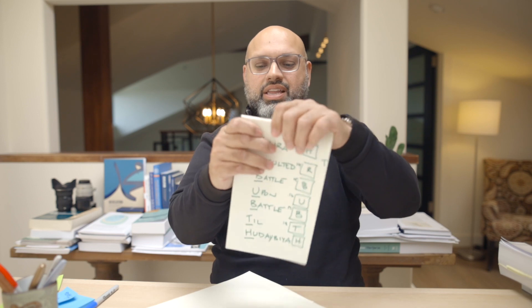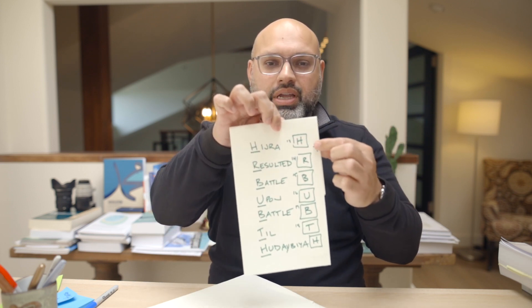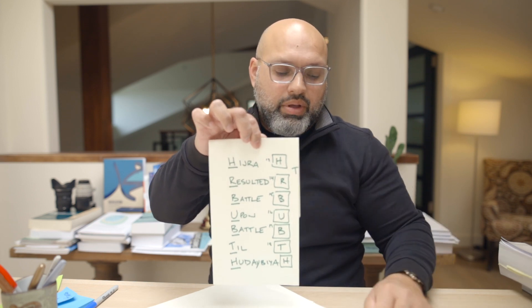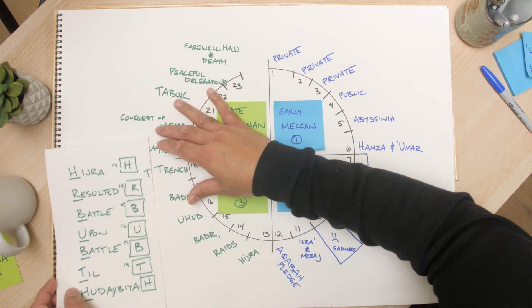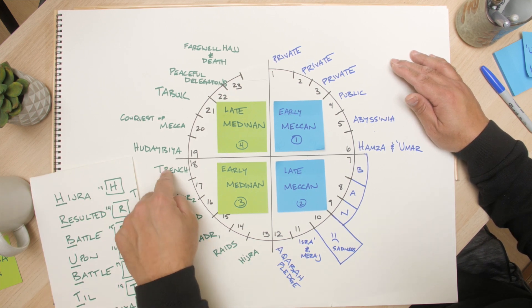That sets up Quran year 13, which is the Hijra — the migration. The mnemonic: 'The Hijra resulted in battle upon battle till Hudaybiyah' — letters H, R, B, U, B, T, H — meaning the Hijra, then raids, then Badr 1, then Uhud, then Badr 2, then the Trench, and then Hudaybiyah. That is the early Medinan period — a very difficult time. By the time they were at the Battle of the Trench, many thought it was all over after 18 years. But Allah found a way out for them, and in Quran year 19 they formed the Treaty of Hudaybiyah — a ceasefire — our final H.